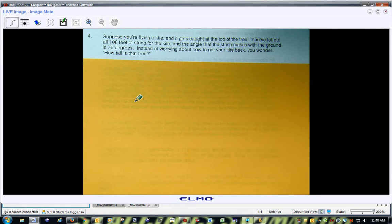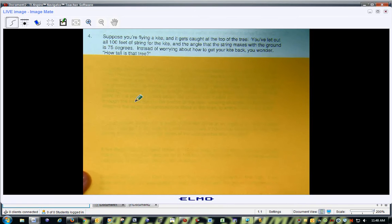Suppose you're flying a kite, gets caught in the top of a tree, you let out 100 feet of string to the kite, and the angle that the string makes with the ground is 75 degrees.